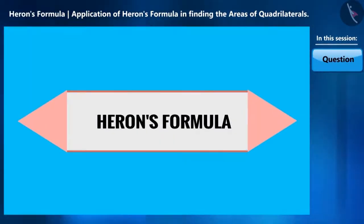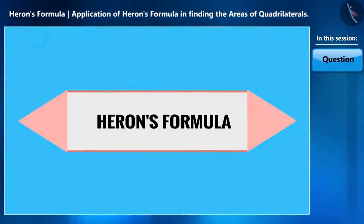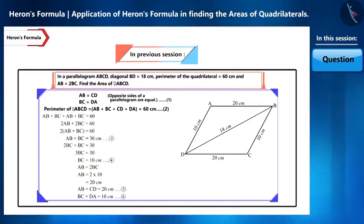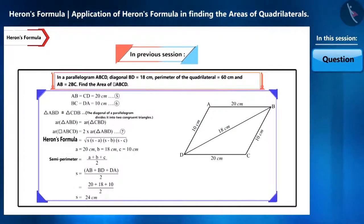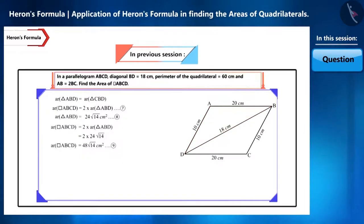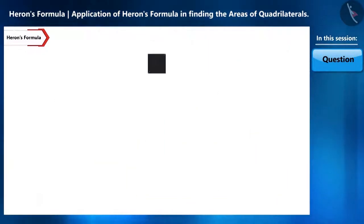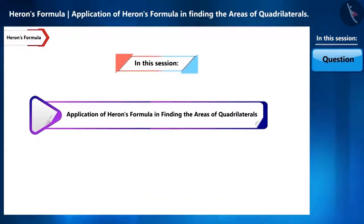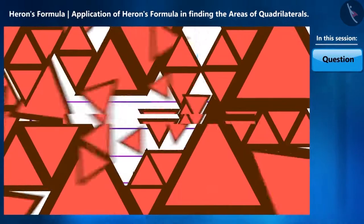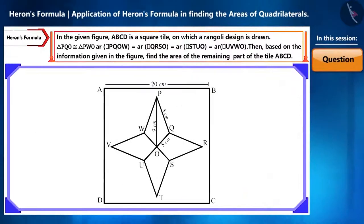Hello friends, welcome to this video on Heron's formula. In the previous video we found the areas of quadrilaterals using Heron's formula. Today we will solve one more interesting question related to this. In the given figure, ABCD is a square tile.